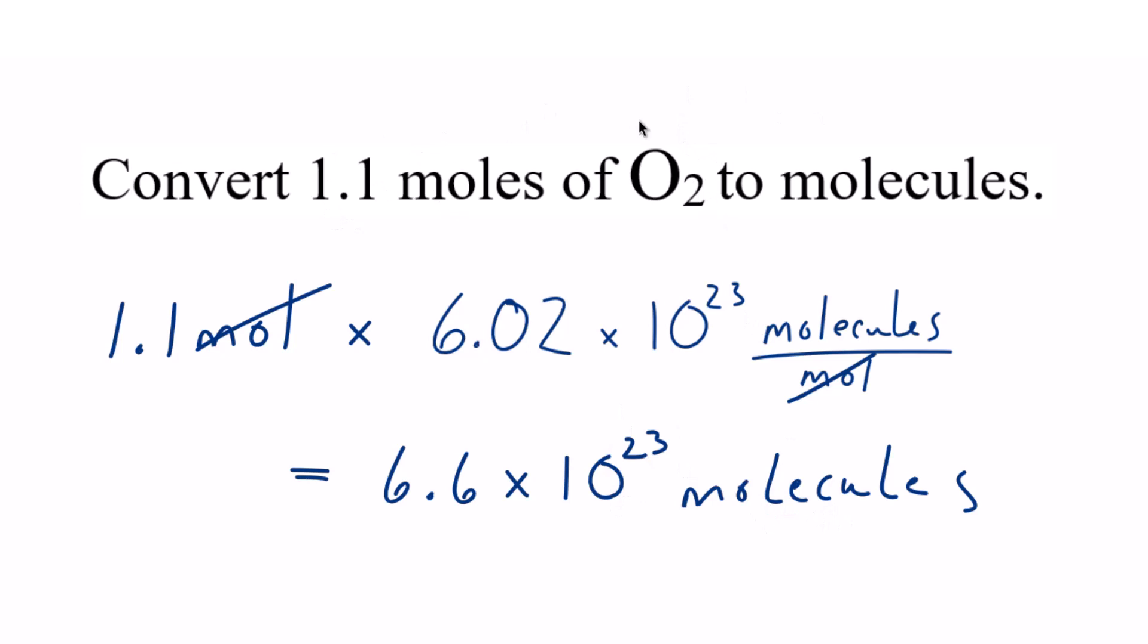So when we convert our 1.1 moles of O2, we get 6.6 times 10 to the 23rd molecules. We know we did it right because moles canceled out, left with molecules. That's what we're looking for.